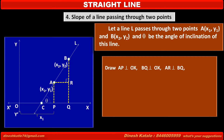Since the x-coordinate of point A is x1, the distance OP is x1. Since x2 is the x-coordinate of point B, the distance OQ is equal to x2. Therefore distance PQ is x2 minus x1.